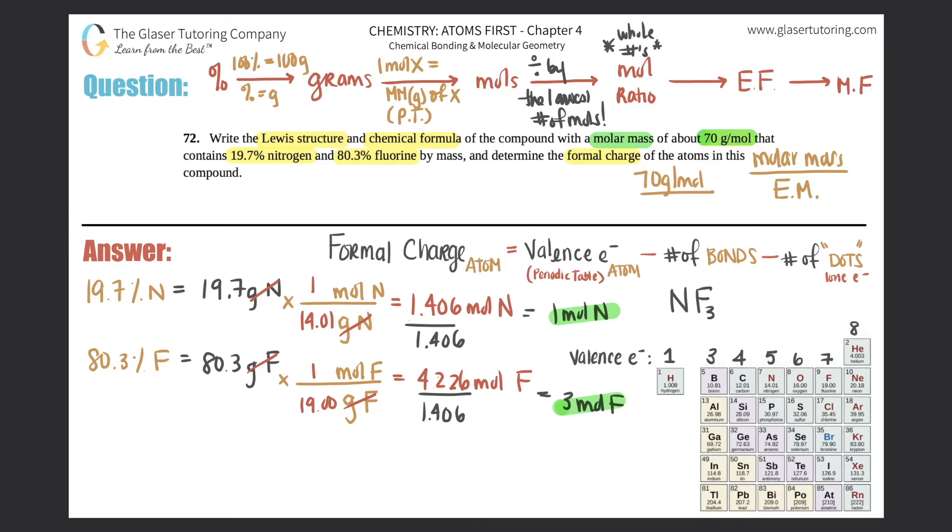The molar mass was 70 grams per mole divided by, now we calculate one nitrogen plus three fluorines. So it would be 14.01 plus three times 19, and you get 71.01 grams per mole. So this will roughly tell you one, which means that it's one times larger, which means your empirical formula would be exactly the same as your molecular formula.